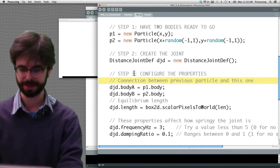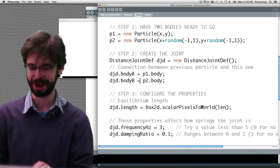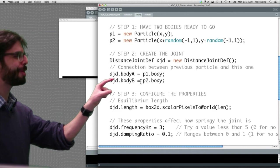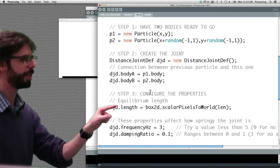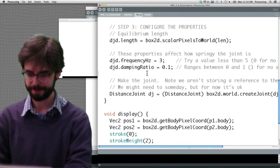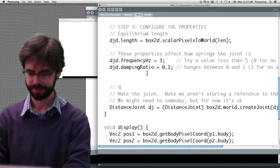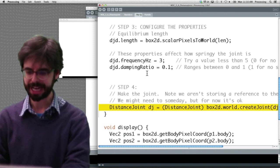Then we can create the joint between those two bodies, maybe technically, that goes there, right? We can create the joint between those two bodies, configure its properties, whoops.